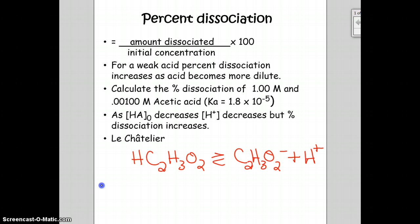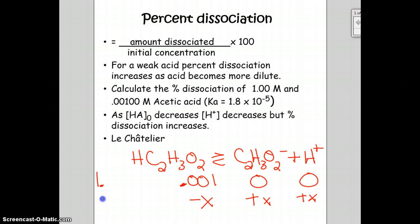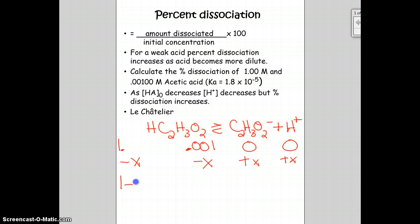We start with 1.0 molar and 0.001 molar. In either case, we start with 0 of the products. We're going to have plus x on the products side, so these should be gaining concentration. Then in either case, the original acid is going to be losing concentration. So at equilibrium for the 1 molar, we have 1 minus x, and for the 0.001 molar, we have 0.001 minus x.